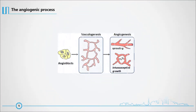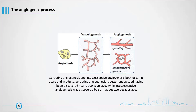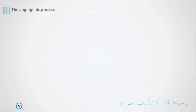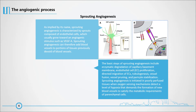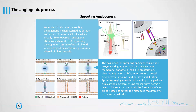Sprouting angiogenesis and intussusceptive angiogenesis both occur in utero and in adults. Sprouting angiogenesis is better understood, having been discovered nearly 200 years ago, while intussusceptive angiogenesis was discovered about two decades ago. Sprouting angiogenesis is characterized by sprouts composed of endothelial cells, which usually grow toward an angiogenic stimulus such as VEGF-A, and can add blood vessels to portions of tissues previously devoid of blood vessels.